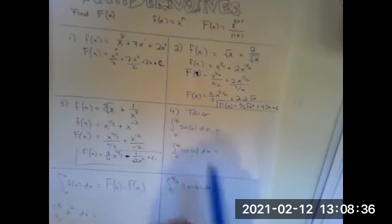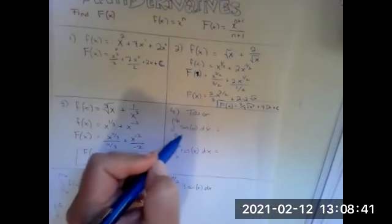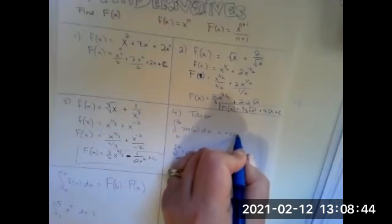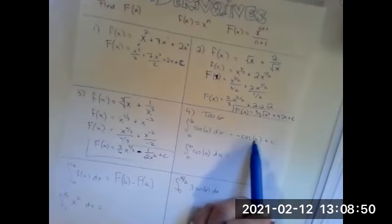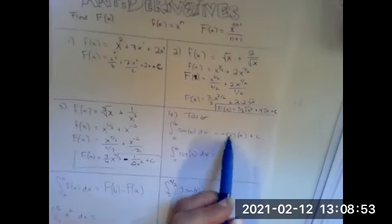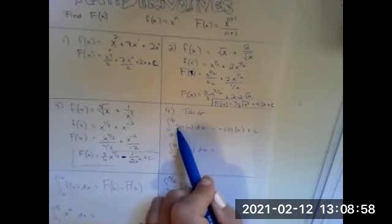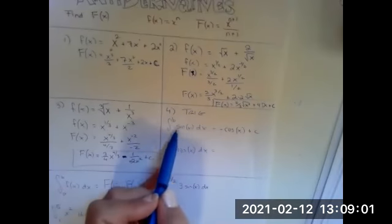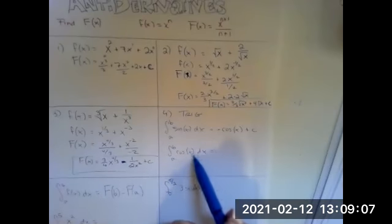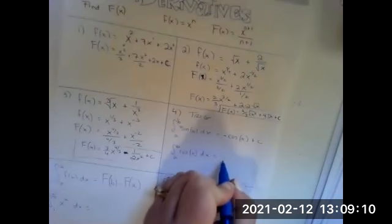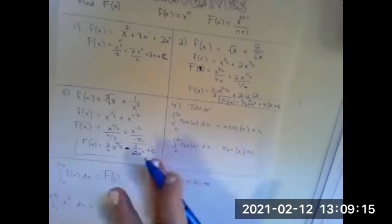Now with trig, here are a couple of good trig integrals to know. The antiderivative of sine is negative cosine of X plus C. Think about the derivative of cosine being negative sine — the derivative of positive cosine is negative sine, so the antiderivative of positive sine would be negative cosine. And the antiderivative of cosine is just sine of X plus C — that comes from doing our derivative in reverse.